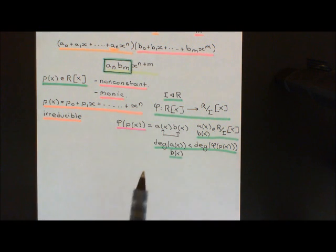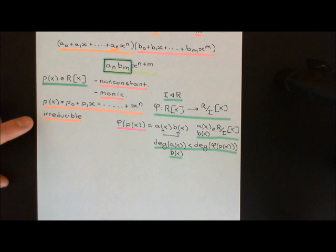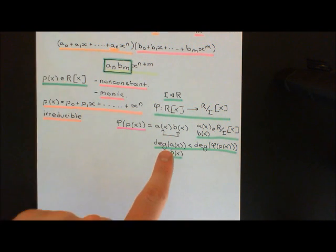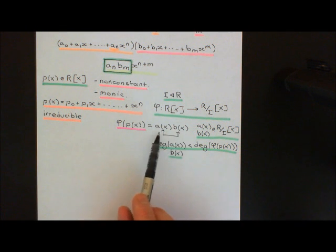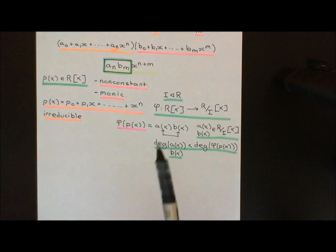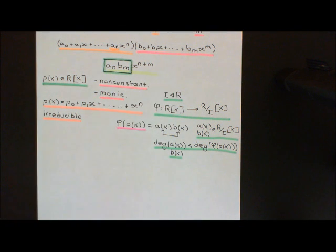It's only if you find one ideal where it's not possible that you can conclude that it's irreducible. You might have to go through ideal after ideal after ideal, using different ones, and hopefully eventually in one you will find that this isn't possible. But finding that factoring is possible in some ideal doesn't allow you to conclude reducibility. So let's now have a go at proving this, and it's not too difficult at all.